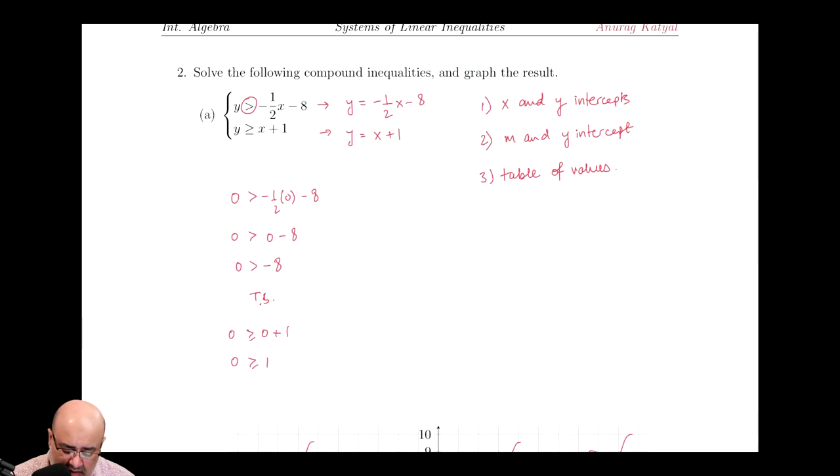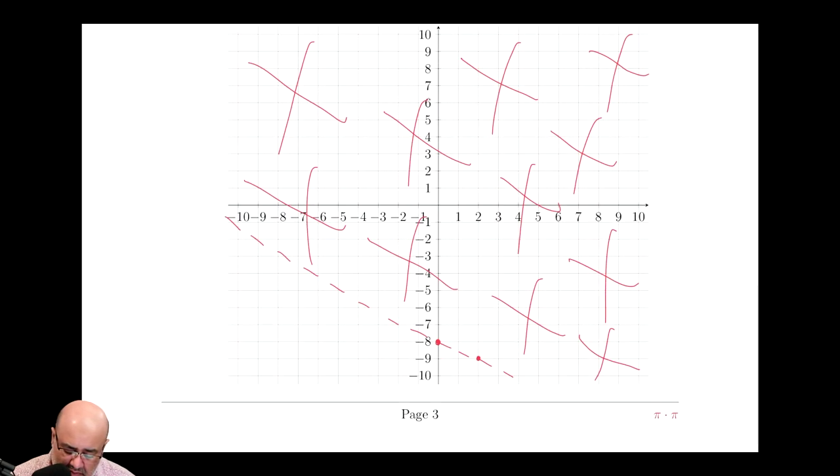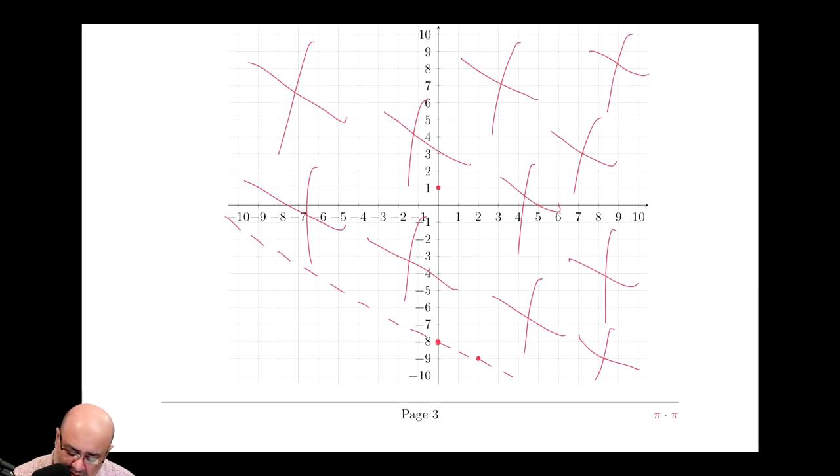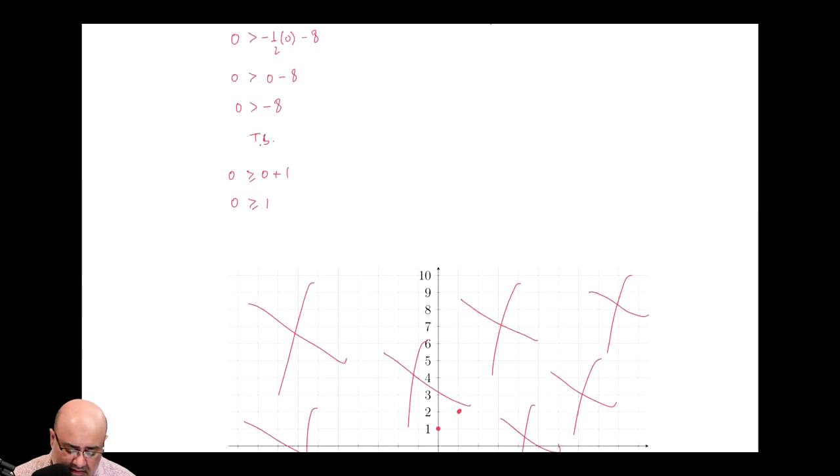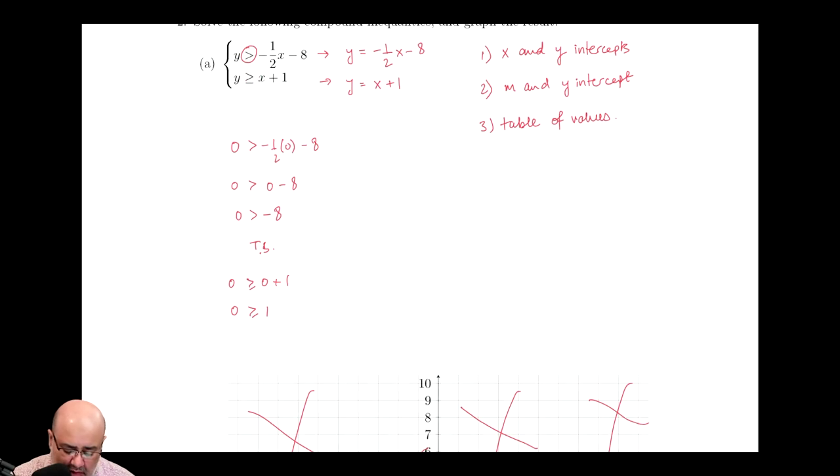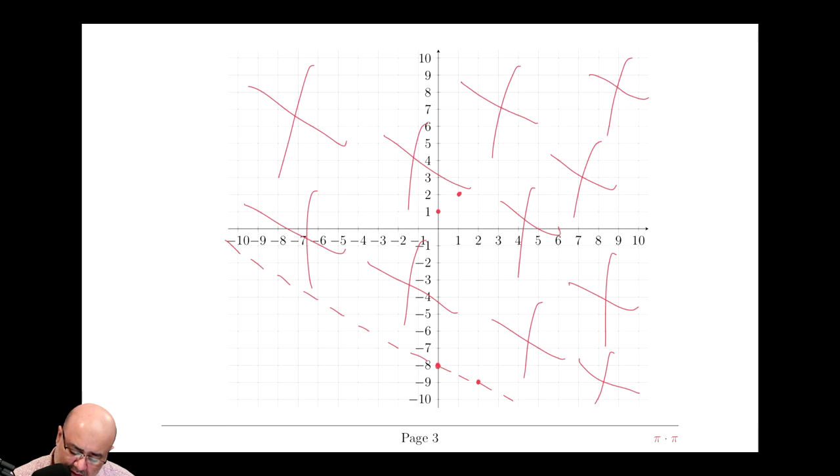For the second line, y equals x plus one, hopefully that's an easy one to graph. Y-intercept is one, and the slope is also one, so you go up one and to the right one. And this line is a solid line, because it's greater than or equal to, so we make a solid line here, and in the other direction, and I forgot the arrowheads here.